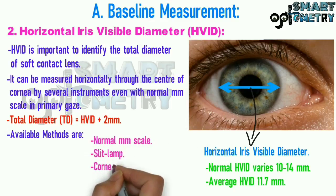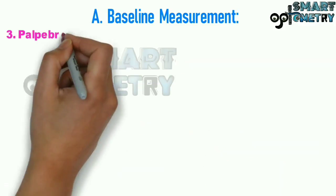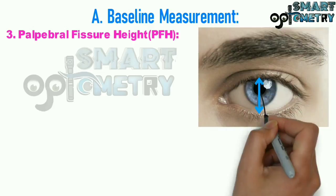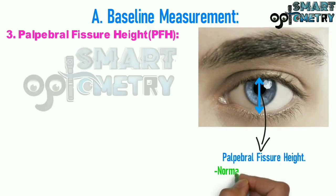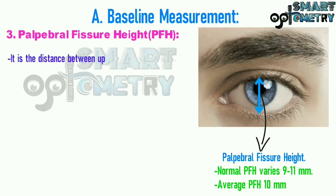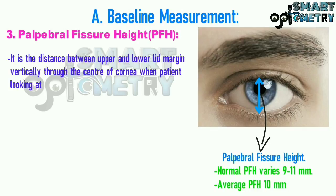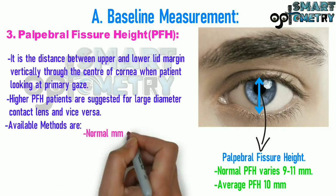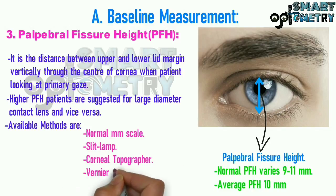3) Palpebral fissure height, or PFH. Normal PFH varies from 9 to 11 mm, with an average of 10 mm. It is the distance between the upper and lower lid margins, measured vertically through the center of the cornea when the patient is looking at primary gaze. Patients with higher PFH are suggested for large diameter contact lenses, and vice versa. Available methods include normal millimeter scale, slit lamp, topographer, and Barnard scale.